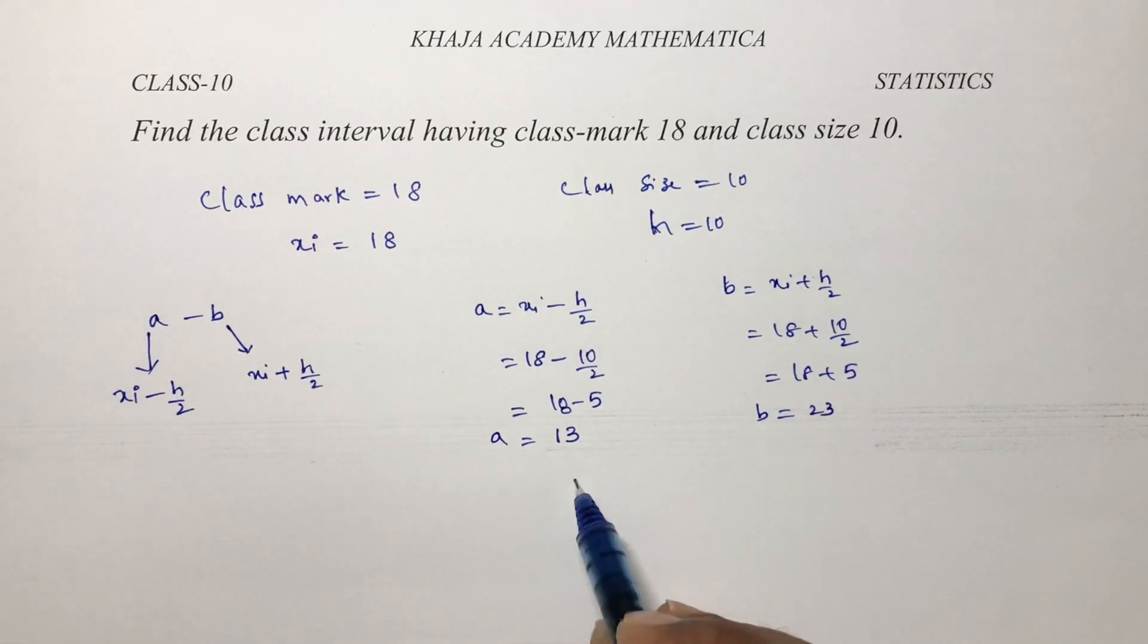So a to b is the class interval we sought, which is 13 to 23.